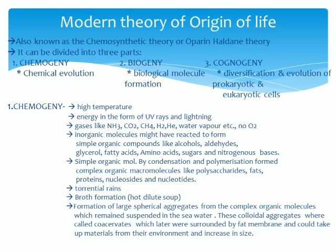These simple organic compounds then by condensation and polymerization formed complex organic macromolecules. Sugars condensed to form polysaccharides; fatty acids and glycerol condensed to form fats; amino acids condensed to form proteins; and nitrogenous bases, phosphate, and sugar combined to form nucleotides and nucleosides.